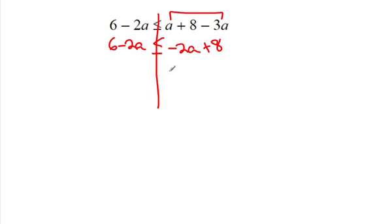All right let's get our a's together. So negative 2a add 2a. Those cancel out. I have 6 is less than or equal to 8.